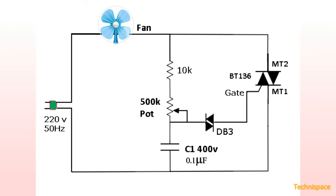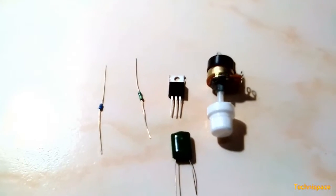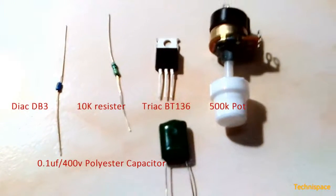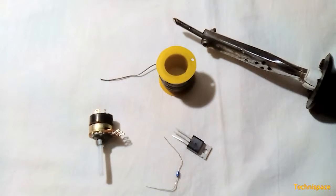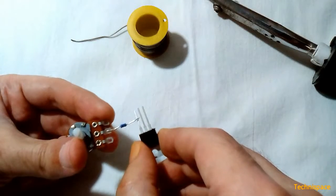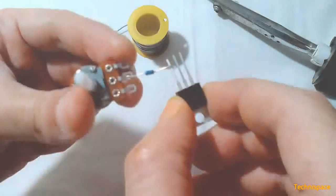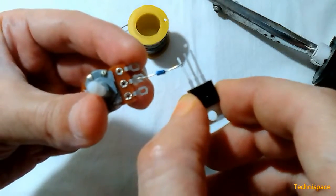You can also connect this circuit to the fan. Knowing parts and assembling together. Now soldering them together as per circuit, first connecting DIAC DB3 to 500k pot and TRIAC gate terminal.